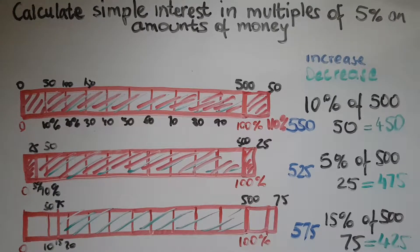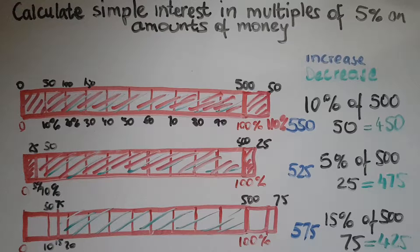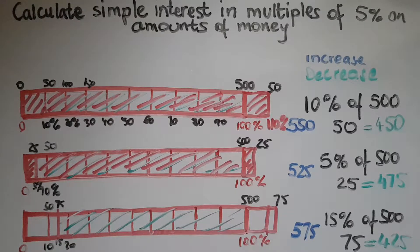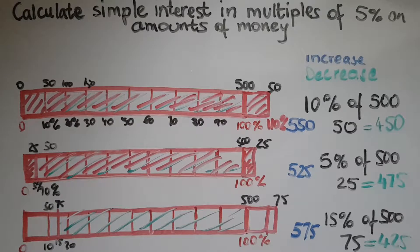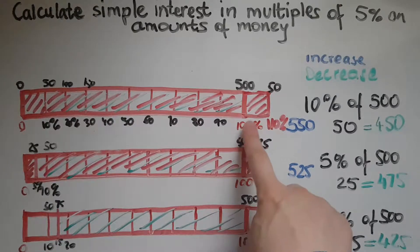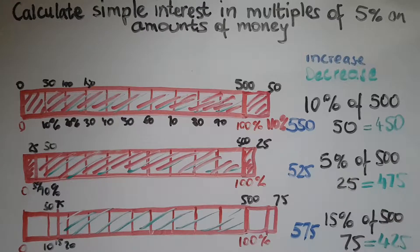When we have a 10% interest rate, that means you are being paid 10% on your investment year on year. So at the end of the first year, you'd be paid 10% of that amount.